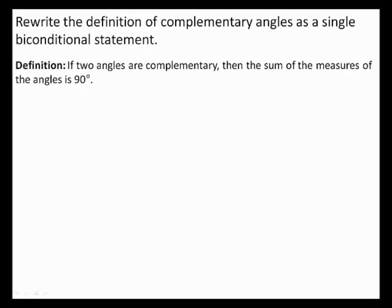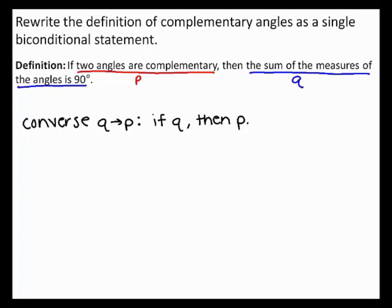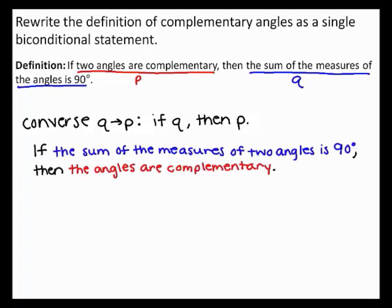Rewrite the definition of complementary angles as a single biconditional statement. The definition states: if two angles are complementary, then the sum of their measures is 90 degrees. When the conditional and its converse are both true, you can write them as a biconditional. Let P be two angles are complementary and Q be the sum of their measures is 90 degrees. The converse — if Q then P — states: if the sum of the measures of two angles is 90 degrees, then the angles are complementary. This is a true statement.